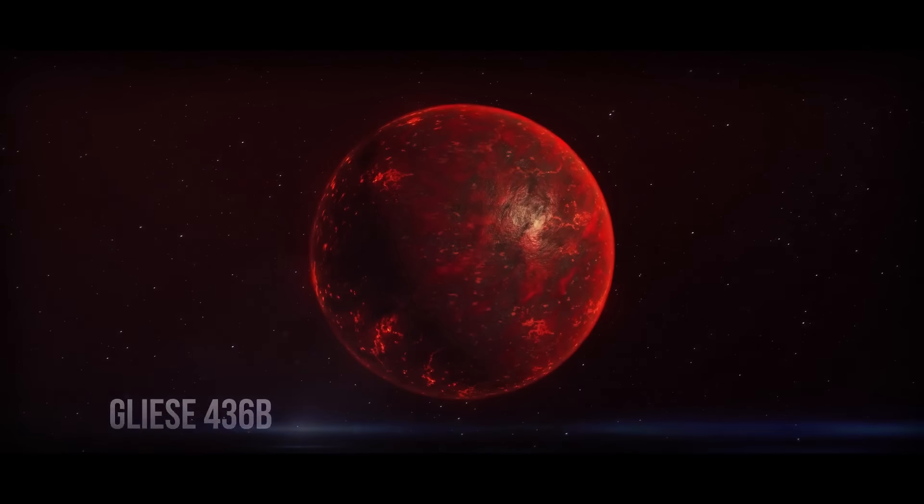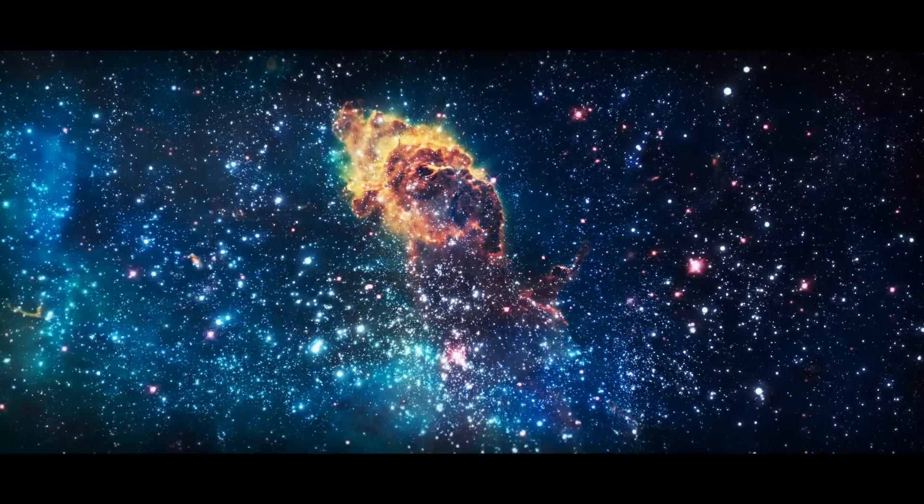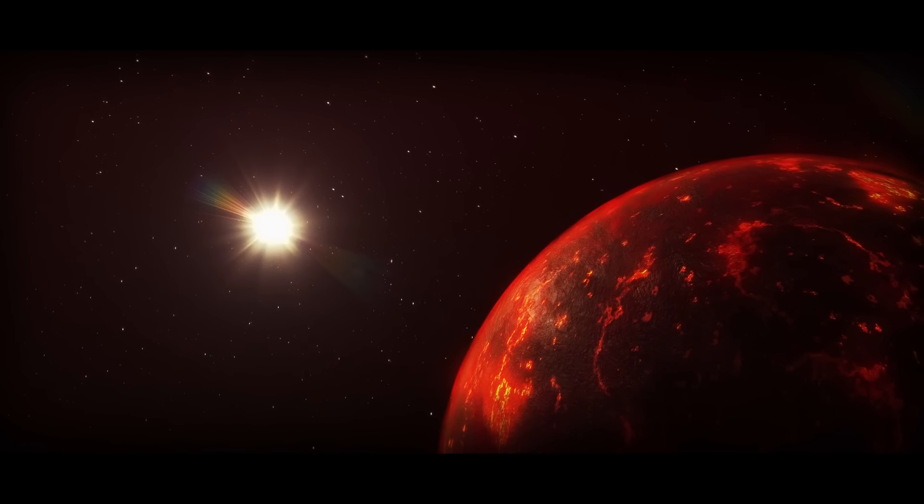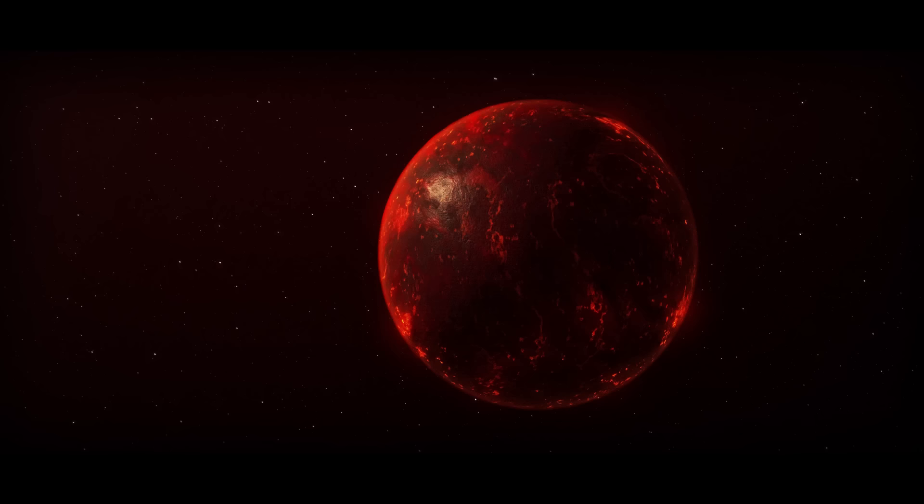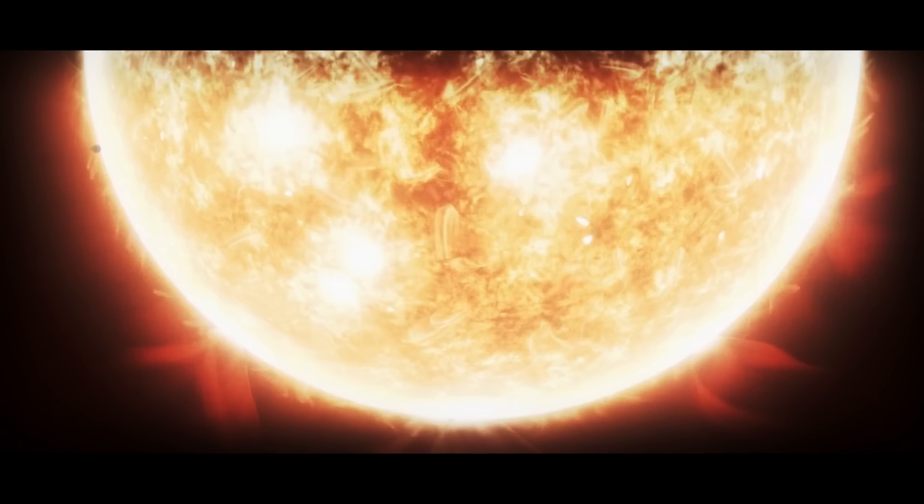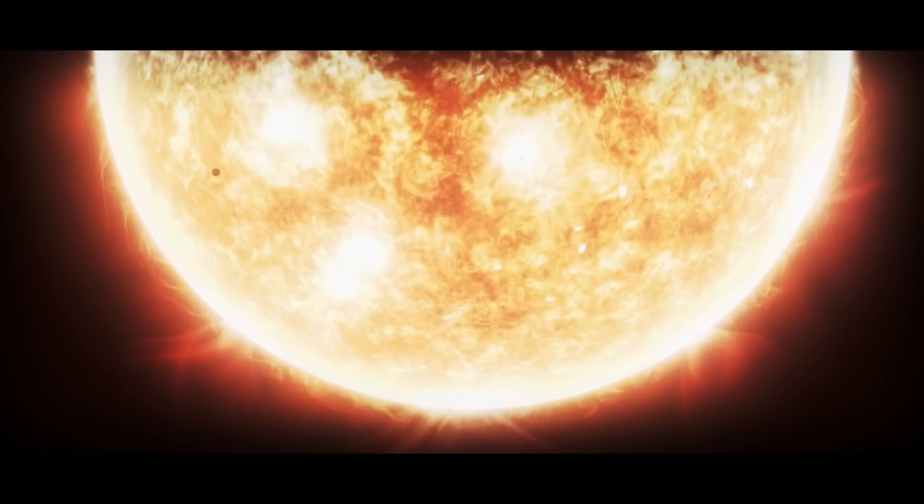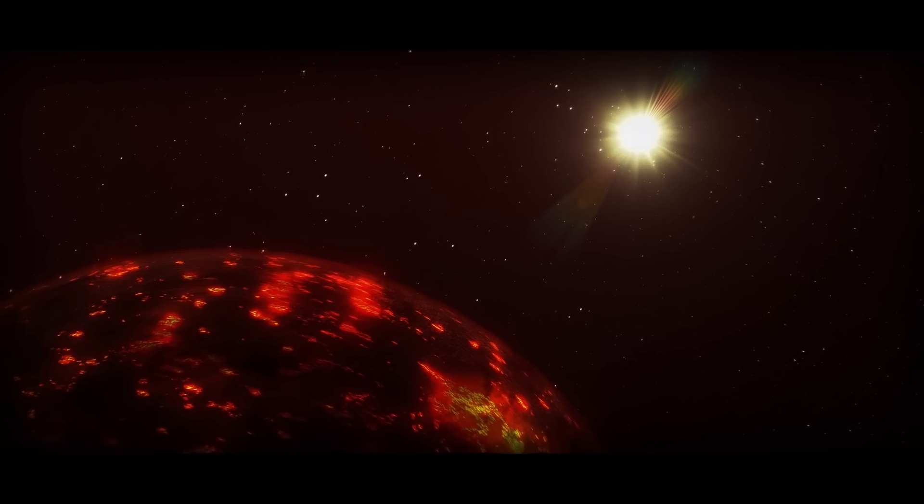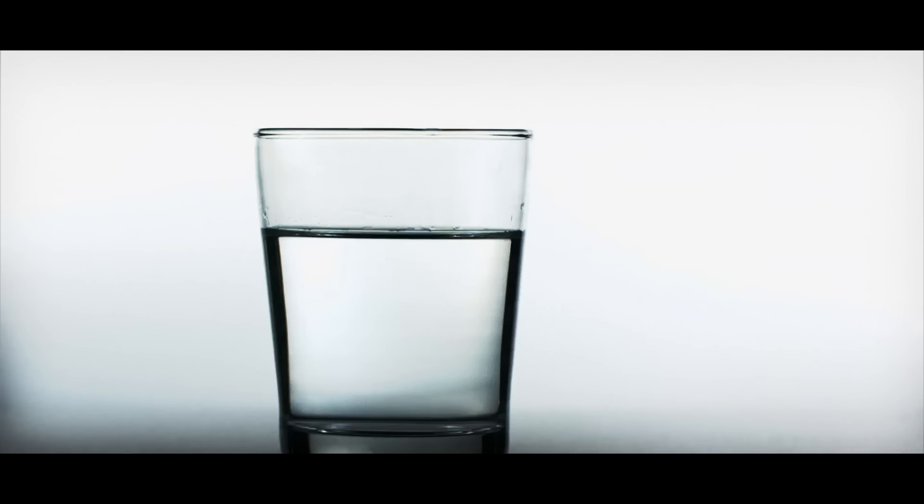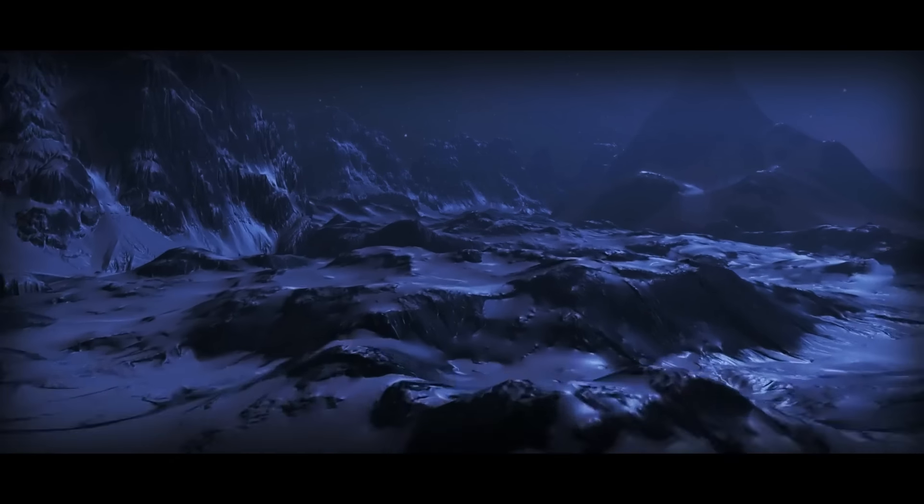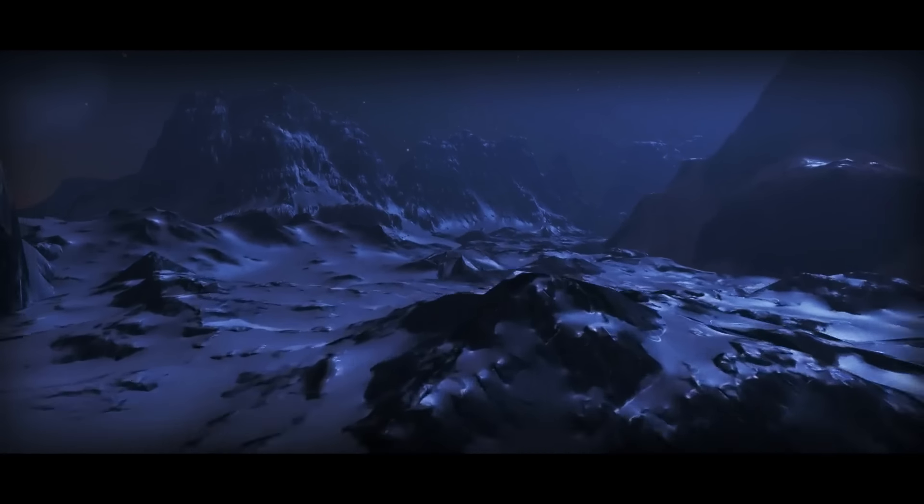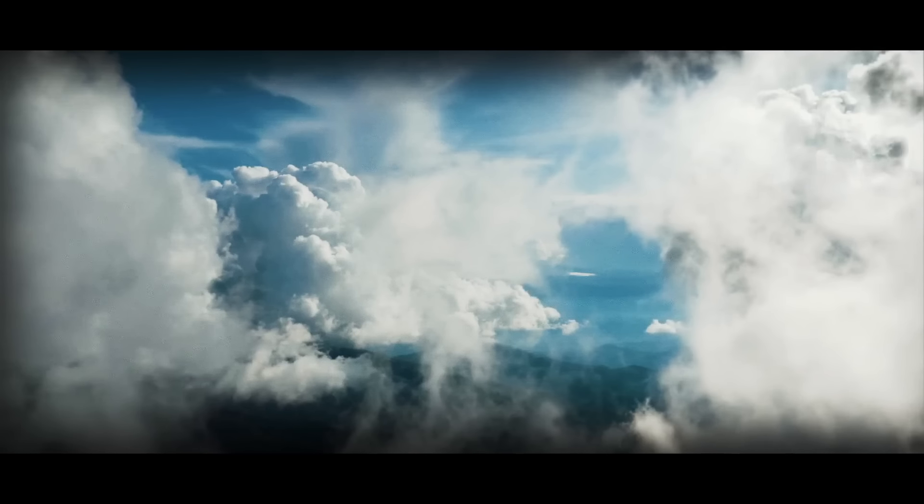Gliese 436b is a Neptune-sized exoplanet, 30 light-years away from our planet, in the constellation of Leo. It makes one full orbit around its star in a little more than two days. This planet defies the laws of physics. It orbits its star, Gliese 436, which is smaller, cooler, and less luminous than our Sun, at a distance 15 times closer than Mercury is to the Sun. When we typically think of ice, we picture a frozen cube. But this planet has an icy surface, even though the temperature there is 980 degrees Fahrenheit. This temperature is way above the melting point, but the ice remains solid and burning hot. This happens because of very strong gravity. It compresses the water vapor in the atmosphere into solid ice. The pressure here doesn't allow the ice to melt, no matter how hot the surface is.